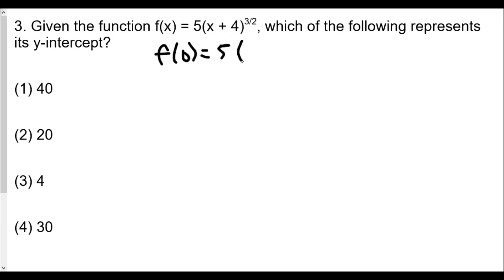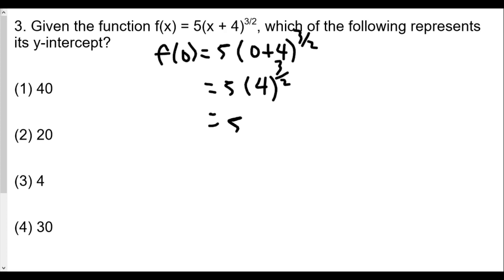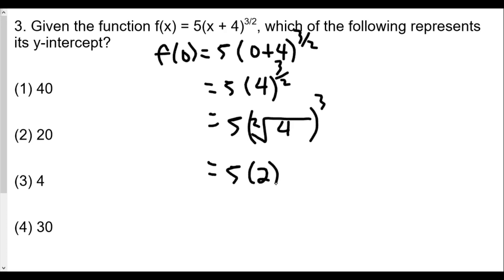So we have 5 times (0 + 4) to the 3/2 power. We evaluate and find that we get 5 times 4 to the 3/2 power. Remember that the 3/2 power really is the square root of 4 to the 3rd, or we can take the square root of 4 and then cube everything, which is much easier without a calculator. The square root of 4 is 2, and 2 to the 3rd — because 2 times 2 times 2 is 8 — gives us 5 times 8, which is 40.